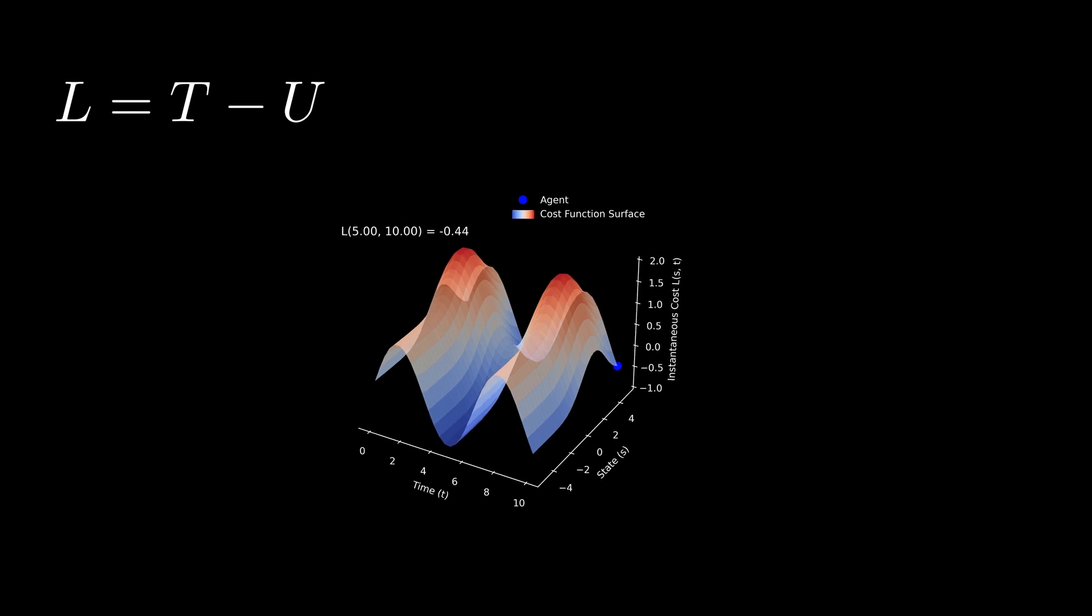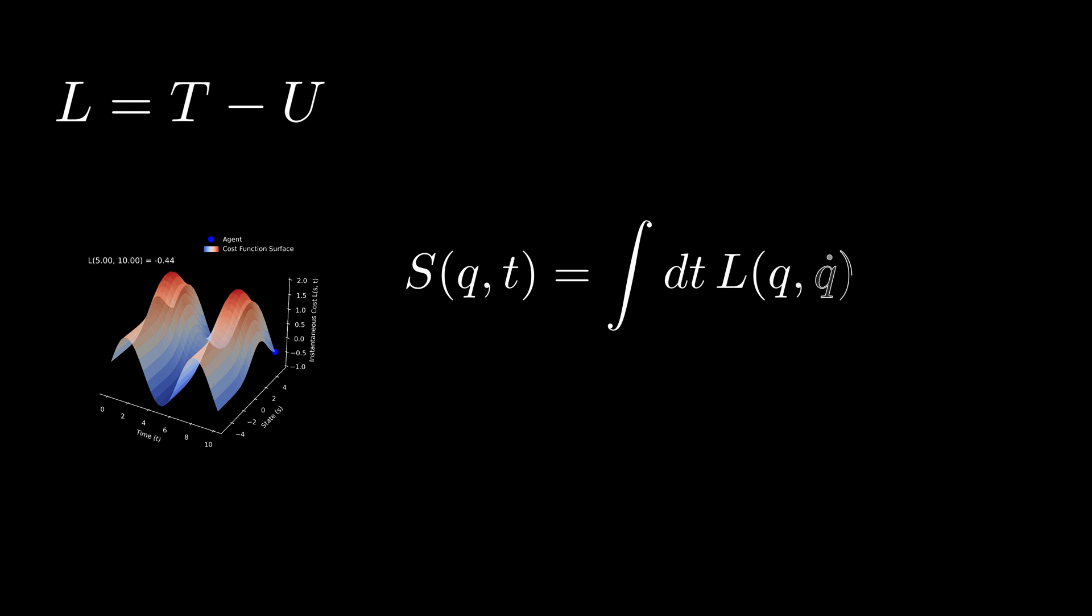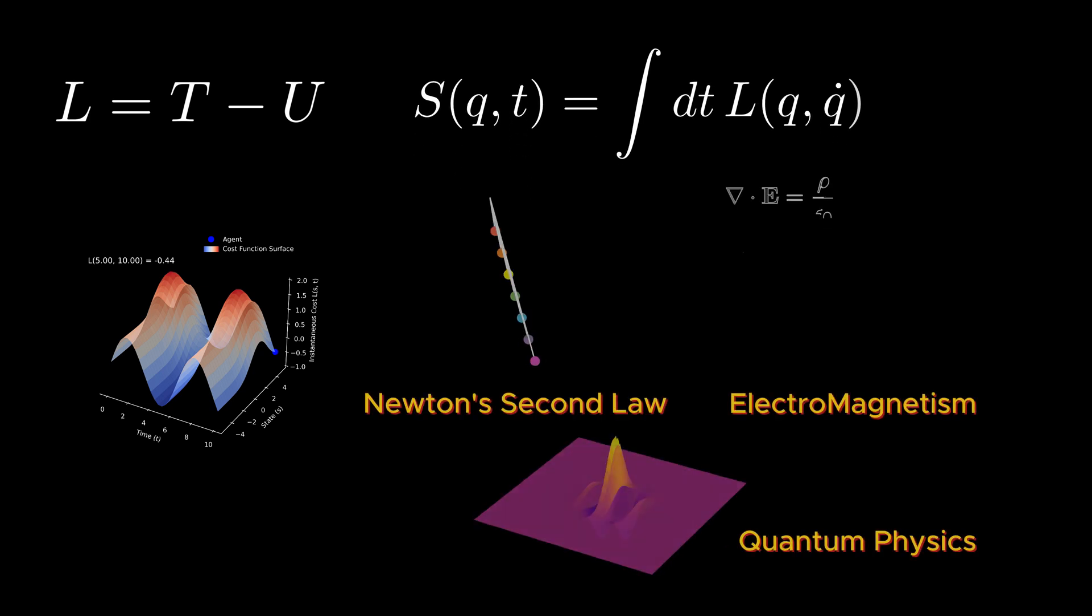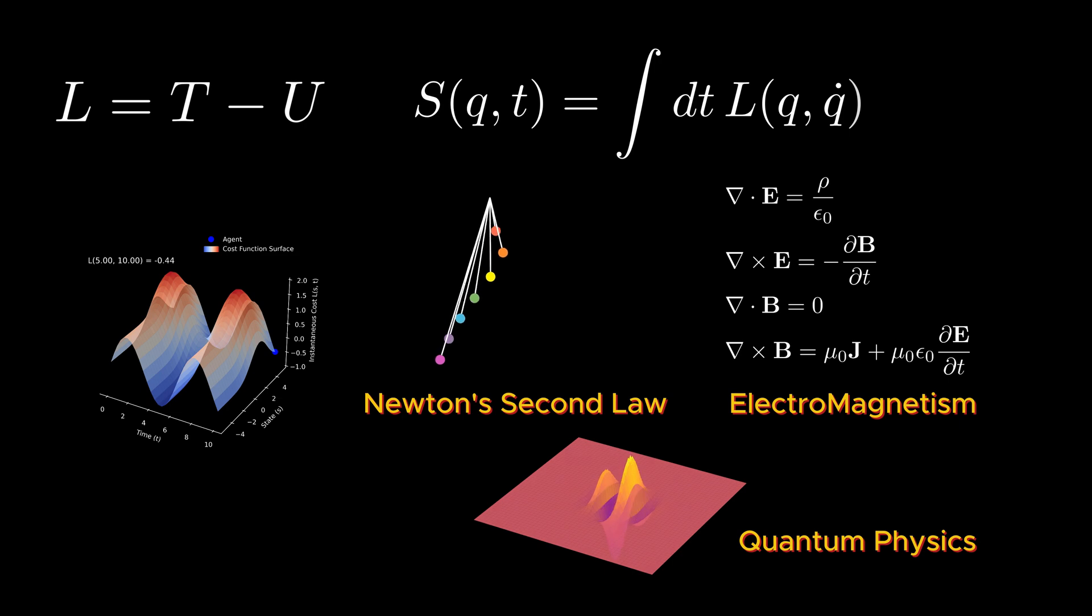Now, from the Lagrangian, we define something called the action potential, which is the time integral over the Lagrangian. It is interesting to note that almost all the fundamental equations of physics come out of minimizing this equation. That means in every phenomenon, nature seems to prefer the optimal path that takes the least action, or in other words, the least time accumulation of the costs.